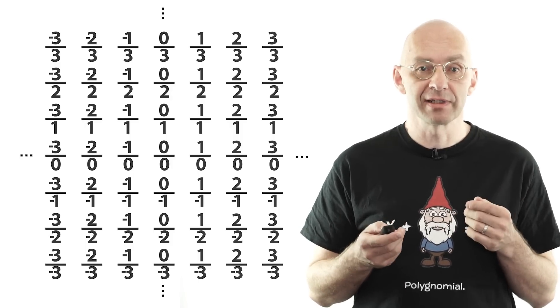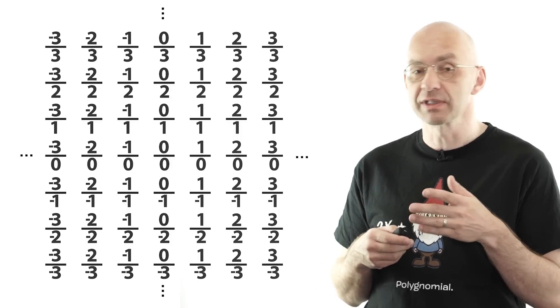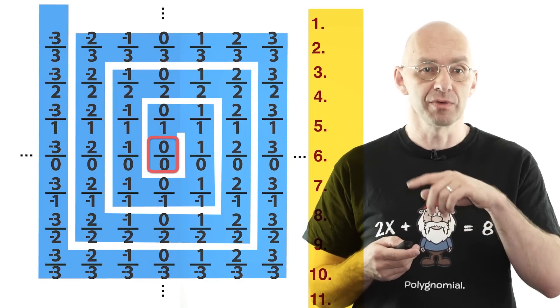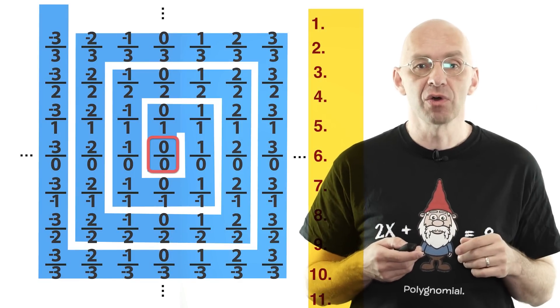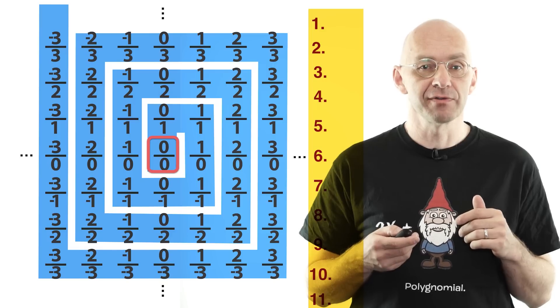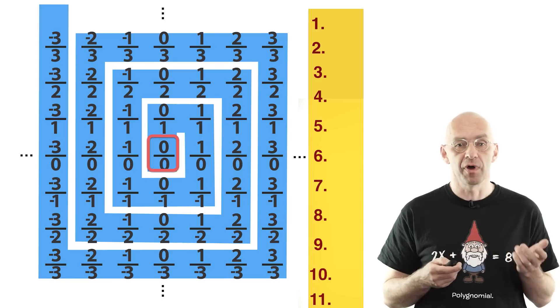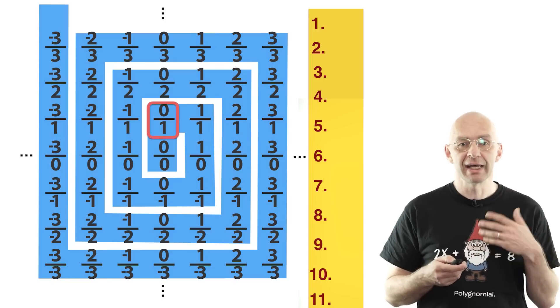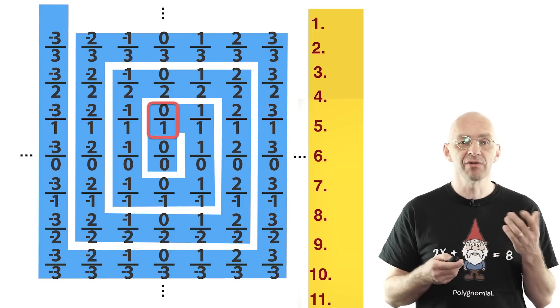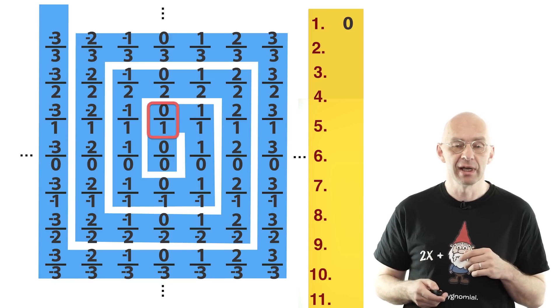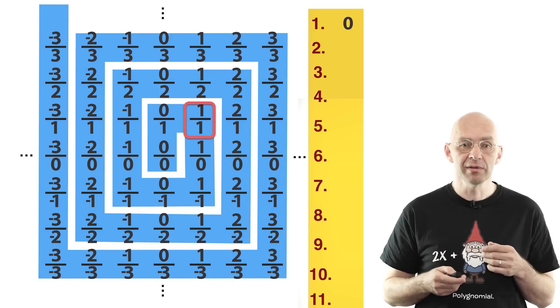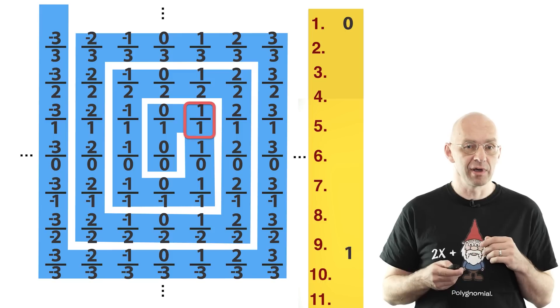Cantor's ingenious trick that makes this possible is to simply walk along this spiral here. So we go and note down each rational number the first time we come across it. So start with 0 divided by 0, that's not a number so let's move on. 0 divided by 1, that's 0, which makes 0 the first rational number on our list. Next comes 1 divided by 1, so 1 is the second number on our list.